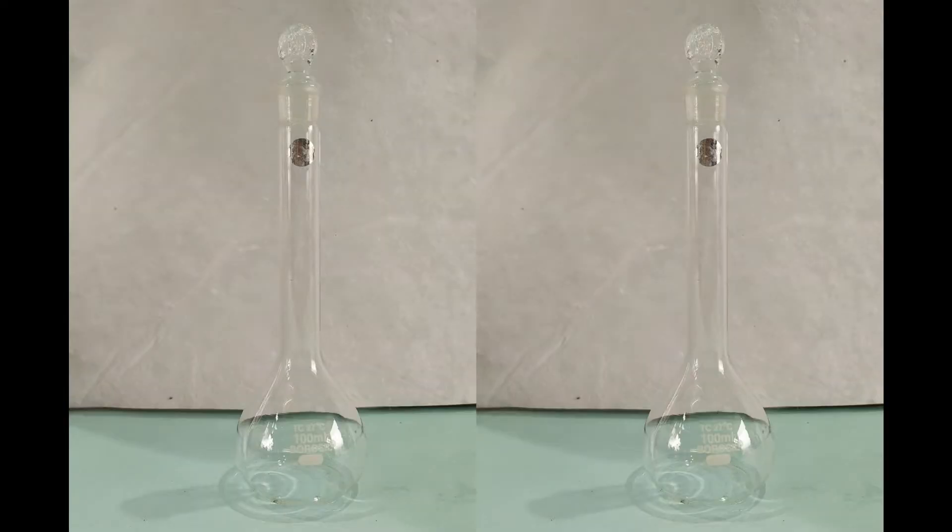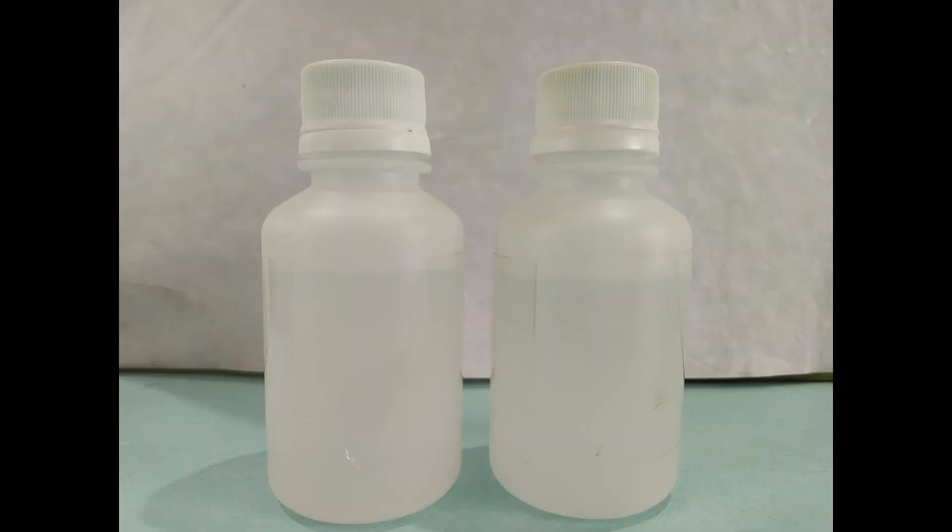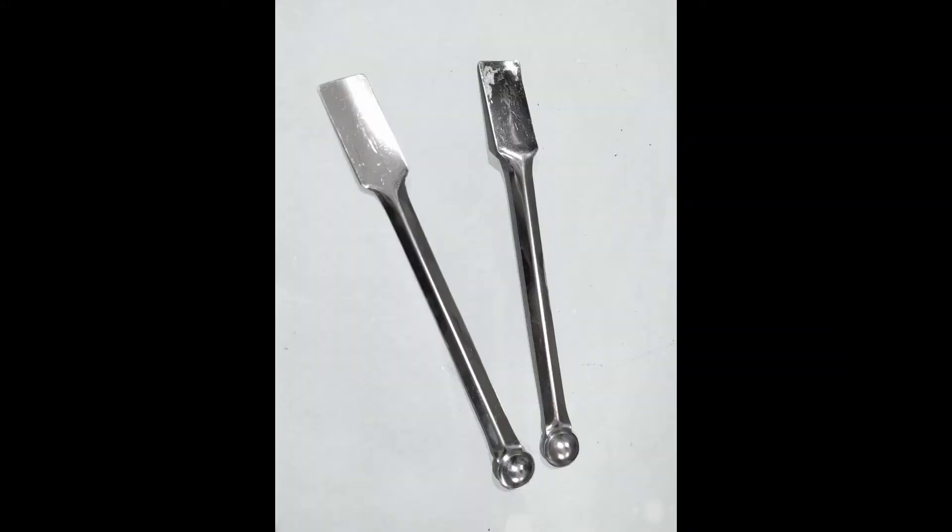You'll also need 2 volumetric flasks or measuring cylinders of 100 ml capacities, 2 small funnels, a dropper or pipette, 2 suitable containers for storing the reagents, 3 watch glasses, and spatulas.